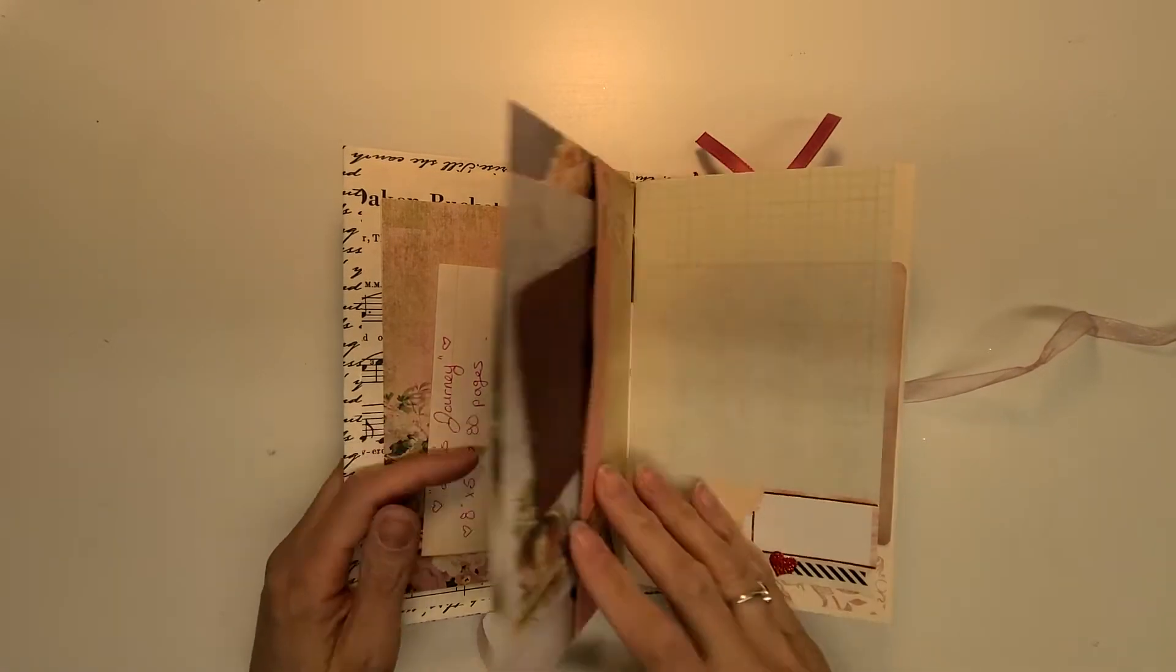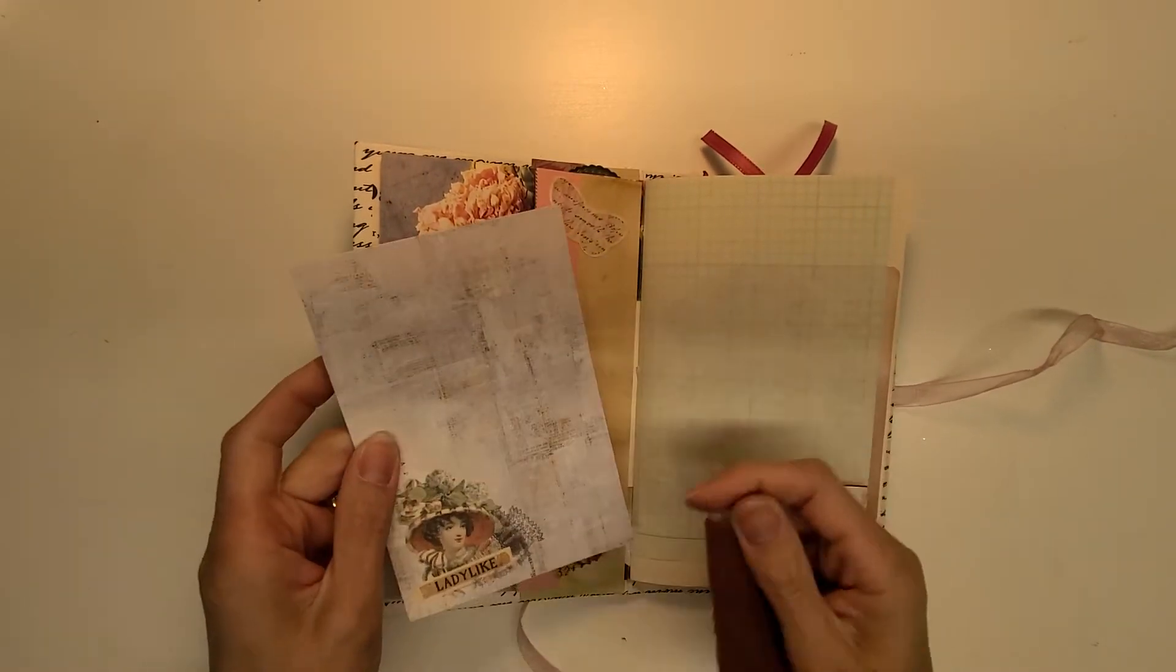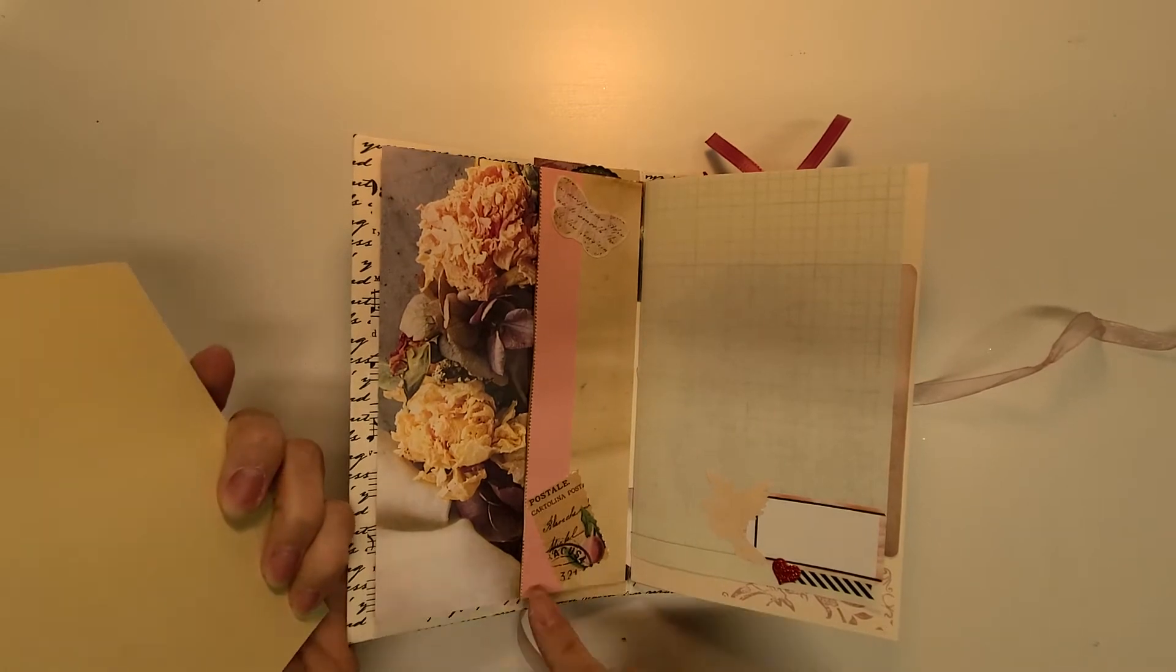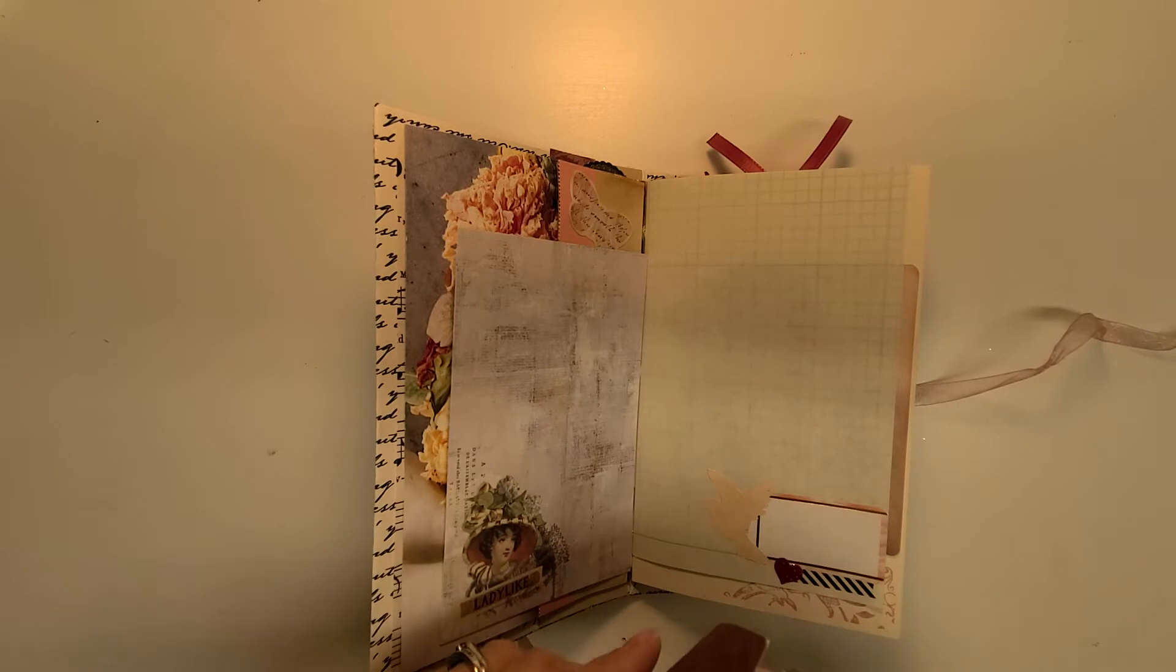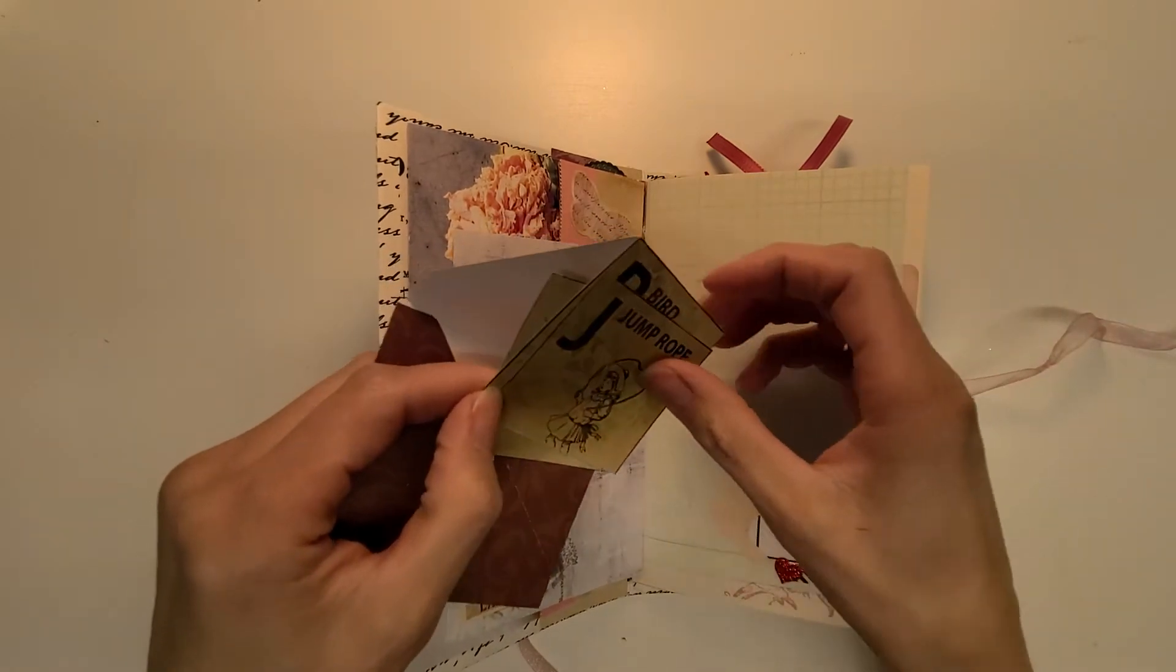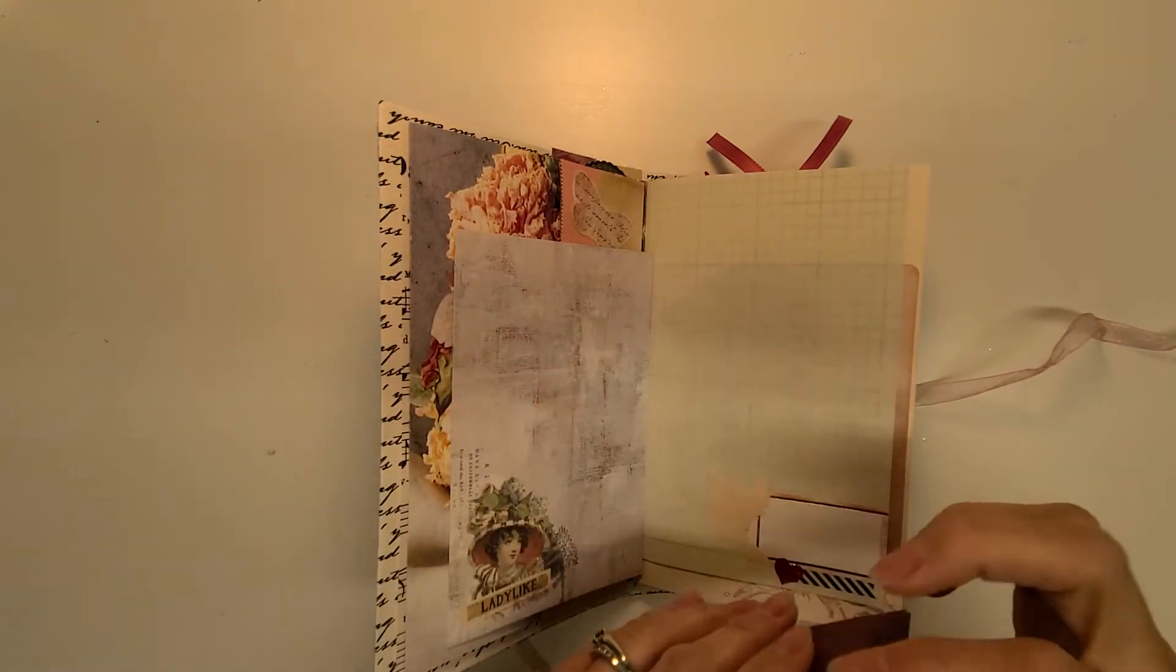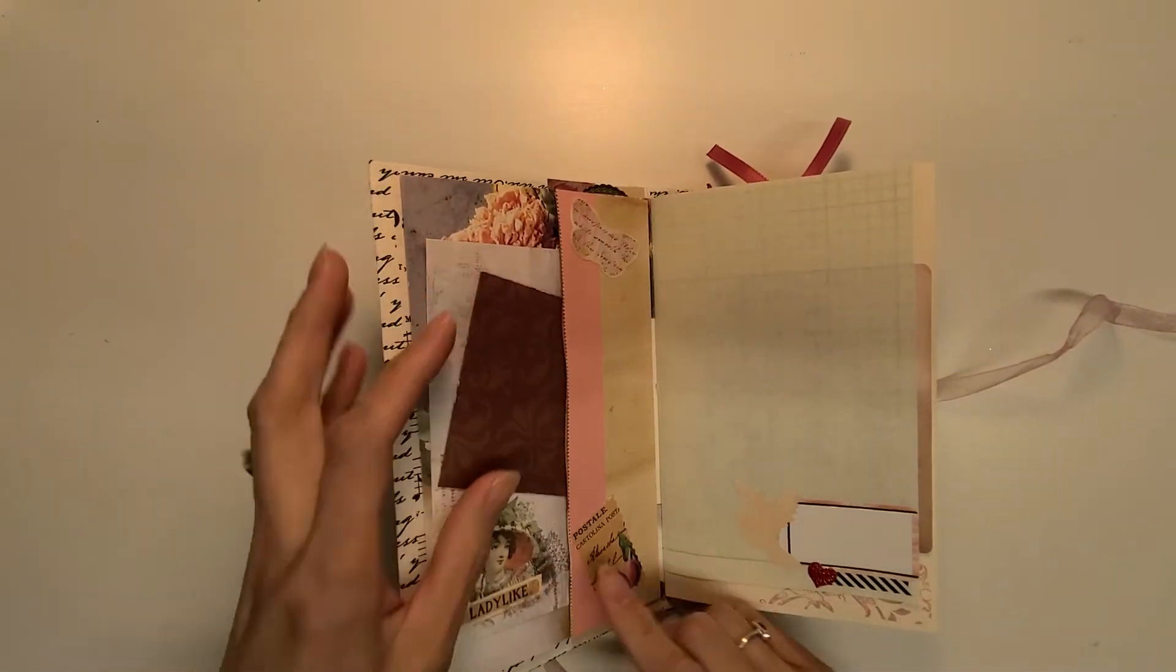So this first page we start off with a pocket and then we have a journal card here that says 'ladylike' and there's some more rose paper. And on this one is just an envelope and it's got a couple of letters from a scrapbook page that I took apart that you could use in your projects. I just thought it would be fun to include those in here just so the envelope wasn't necessarily empty, but trying to use up my bits and pieces too to keep it fresh.